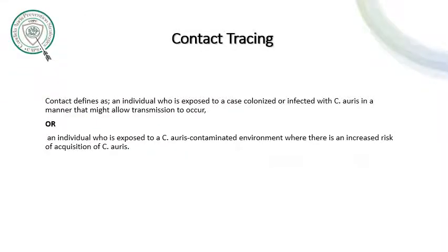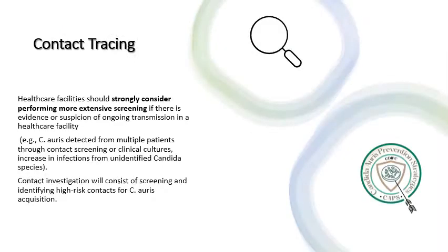Contact tracing: a contact is defined as an individual who is exposed to a case colonized or infected with Candida Auris in a manner that might allow transmission to occur, or an individual who is exposed to a Candida Auris-contaminated environment where there is an increased risk of acquisition. Healthcare facilities should strongly consider performing more extensive screening if there is evidence or suspicion of ongoing transmission, for example, Candida Auris detected from multiple patients through contact screening or clinical cultures, or an increase in infections from unidentified Candida species.